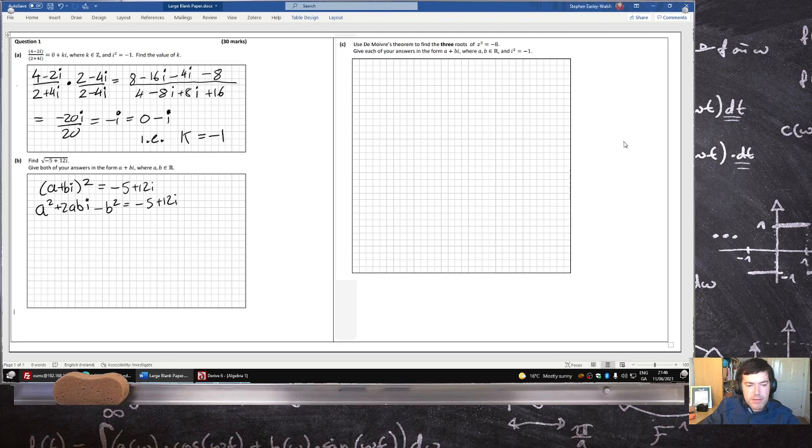So reals equals reals, a squared minus b squared equals minus 5, and imaginaries equal imaginaries, 2ab equals 12. So that means ab equals 6, which means a equals 6 over b.